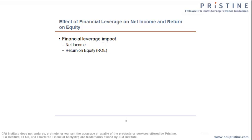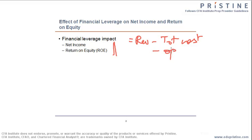How does financial leverage impact the two measures? Net income is defined as the final income for a company, which is your revenue minus total cost. The total cost may include operating cost as well as financial cost. An increase in financial leverage will actually decrease net income, because the financial cost would increase, and therefore the total cost will increase, and that would proportionately reduce the net income. Therefore, an increase in financial leverage would decrease net income.